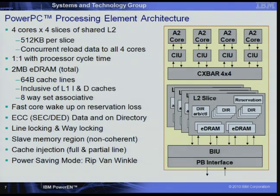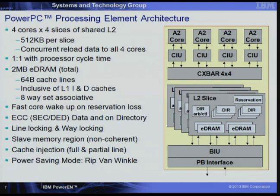The four cores are integrated with a shared L2. Each core has a separate interface unit connecting to a crossbar that provides access to four L2 slices. Each slice is essentially its own complete L2—including directories, a reservation station—and is built out of ED-RAM. Each slice is 512 kilobytes of ED-RAM made from multiple macros, providing significant bandwidth. The slices connect to the bus through a bus interface unit and an asynchronous interface.